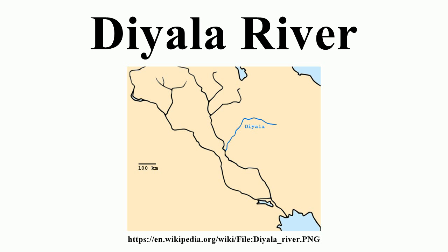The Diyala governorate in Iraq is named after the river. Dams: In Iran, the Diyan Dam is currently under construction near Diyan in Kermanshah province. The purpose of the dam is to divert a significant portion of the river to southwestern Iran for irrigation through the 48-kilometre-long Nosoud water-conveyance tunnel and to produce hydroelectric power. In Iraq, the river first reaches the Darbandikhan Dam, which generates hydroelectric power and stores water for irrigation. It then flows down to the Hemrin Dam for similar purposes.